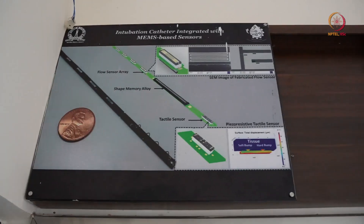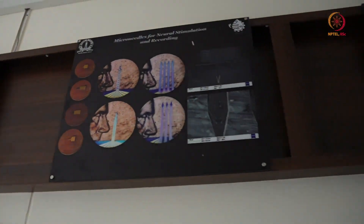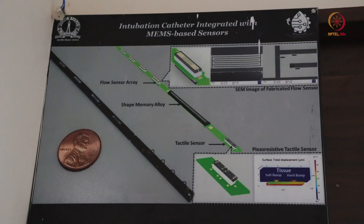Before going inside, from outside we will show some of the work that we have done using this facility. The first image discusses an intubation catheter integrated with MEMS-based sensors. Here we can see a force sensor array and a tactile sensor which are used for understanding airway choking or airway obstruction. The force sensor array was implemented by a series of heaters, and the tactile sensor is basically a resistive tactile sensor. These are integrated on a flexible PCB, and the force sensor and flow sensor array — basically the heaters — are fabricated in our facility.